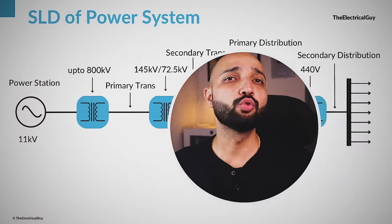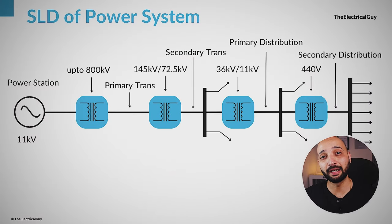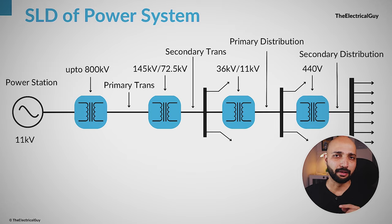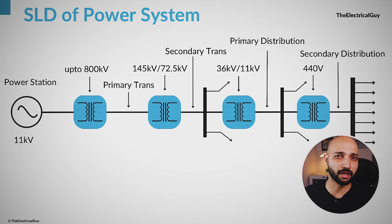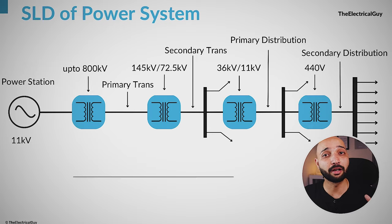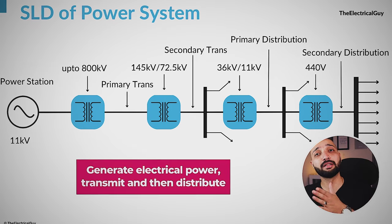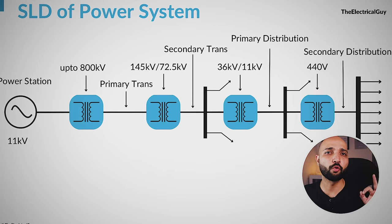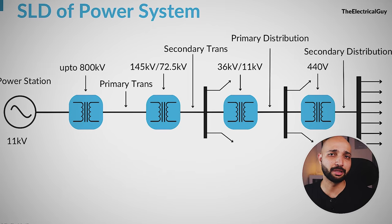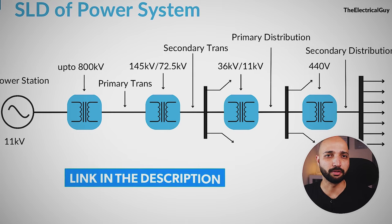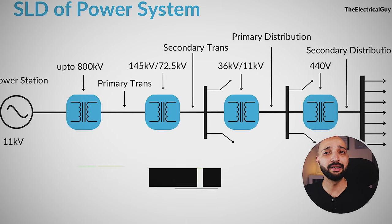What you can see on your screen is the single line diagram of a typical power system. Let's try to read and understand this diagram. The purpose of a power system is to generate electrical power, transmit it, and then distribute it to the end consumer. Please note that an SLD is not meant to give all the details, but just a summary.